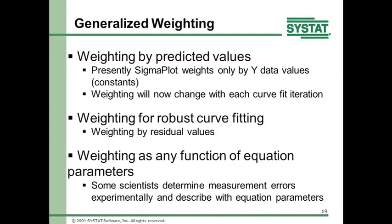Generalized weighting means you can weight in different ways. Previously in SignalPlot 12 there were weights only by the Y data values — constants that don't change during curve fitting. But now with predicted values weighting, the weighting changes with each curve fit iteration. As the curve changes over the data, the Y values on the curve at each X data point are the predicted values used for the next iteration, continuing until convergence. You can also weight by residual values, which produces a robust curve fit that minimizes the effect of outliers.